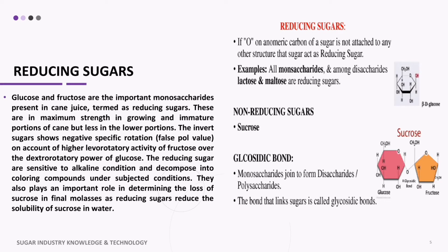Glucose and fructose are the important monosaccharides present in cane juice, termed as reducing sugars. These are at maximum strength in the growing and immature portions of cane, but less in the lower portions. Invert sugars show a negative specific rotation — a false pole value — on account of the higher levorotatory activity of fructose over the dextrorotatory power of glucose. Reducing sugars are sensitive to alkaline conditions and decompose into coloring compounds. They also play an important role in determining the loss of sucrose in final molasses, as reducing sugars reduce the solubility of sucrose in water.